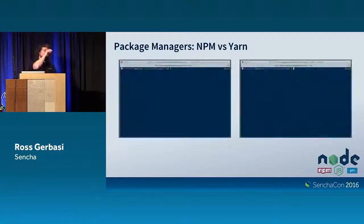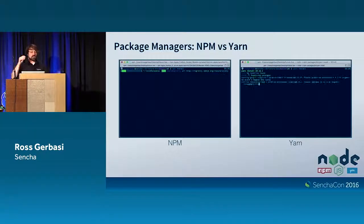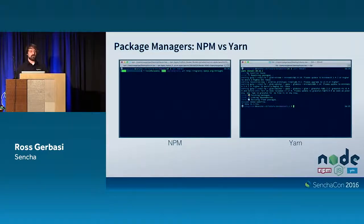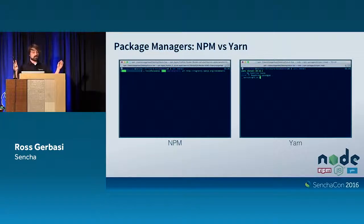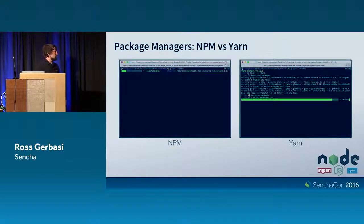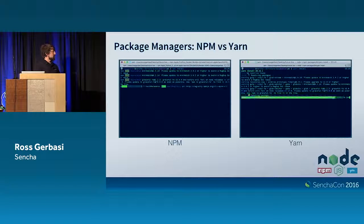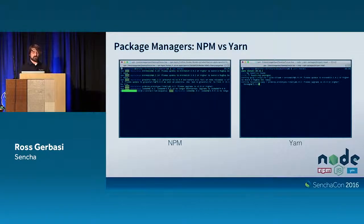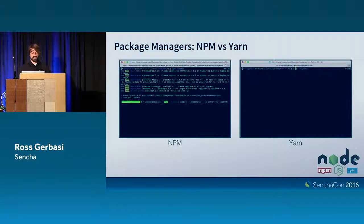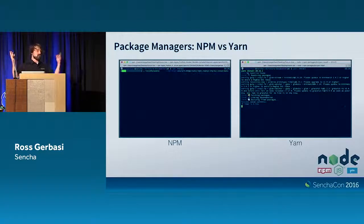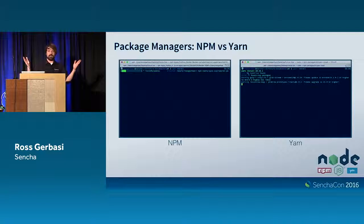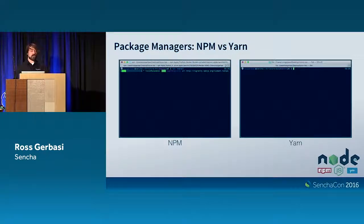Up on the left we have NPM, on the right we have Yarn, and they're installing the same thing. Yarn's done. NPM is still going. Now it's two for Yarn, still zero for NPM. Three for Yarn... four for Yarn, and NPM is still installing its first one. Come on NPM! Five times — five installs for Yarn to one for NPM, doing the same thing, putting packages on your computer.